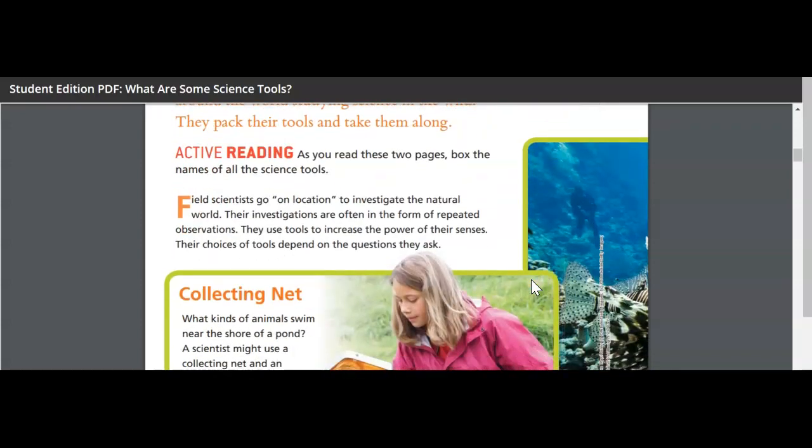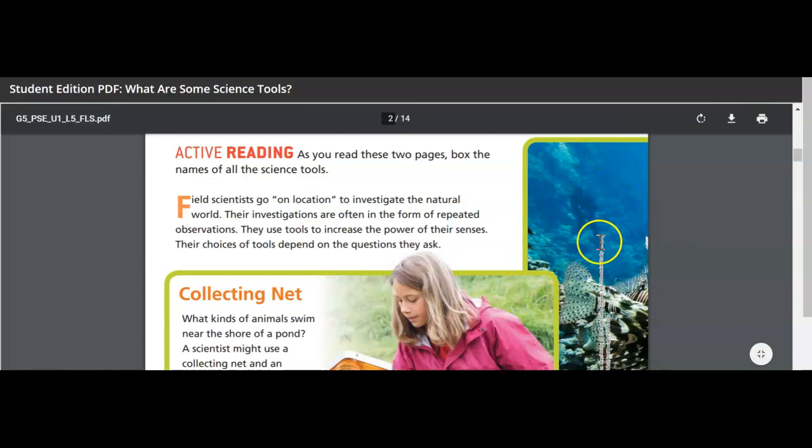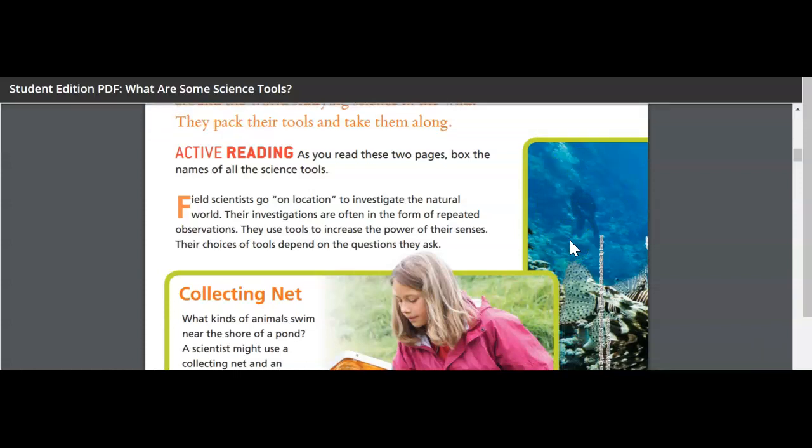They pack their tools and take them along. Field scientists go on location to investigate the natural world. Their investigations are often in the form of repeated observations. They use tools to increase the power of their senses. Their choices of tools depend on the questions they ask. For example, look at this guy. He's in the actual habitat of the animals he's studying.